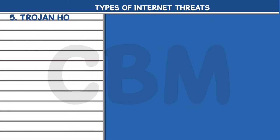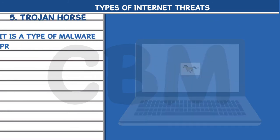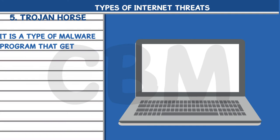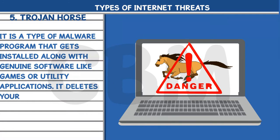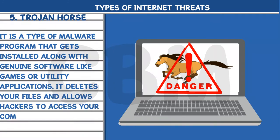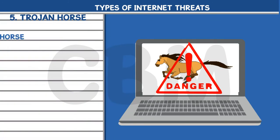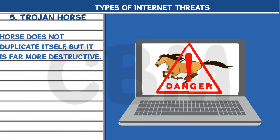5. Trojan Horse: It is a type of malware program that gets installed along with genuine software, like games or utility applications. It deletes your files and allows hackers to access your computer remotely. Unlike the worm, Trojan Horse does not duplicate itself, but it is far more destructive.